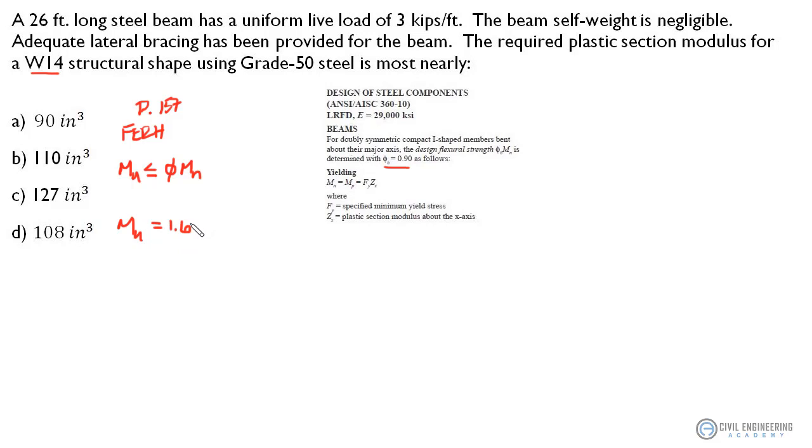So first thing we need to do is solve for M sub U or the ultimate moment and if you'll remember that's going to equal 1.6 times the live load moment plus 1.2 times the dead load moment and again all that's going to be set to less than or equal to phi times the nominal moment. Well from the problem the only thing that we've been given is the live load, the distributed live load, and we've been told that the self beam weight is negligible so we're not going to be dealing with any dead load, it's all live load.